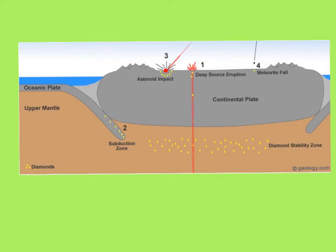Number three is diamond formation at impact spots. When asteroids or meteors fall from space, there is enough heat and pressure to form diamonds. These are areas at the surface where that can happen.